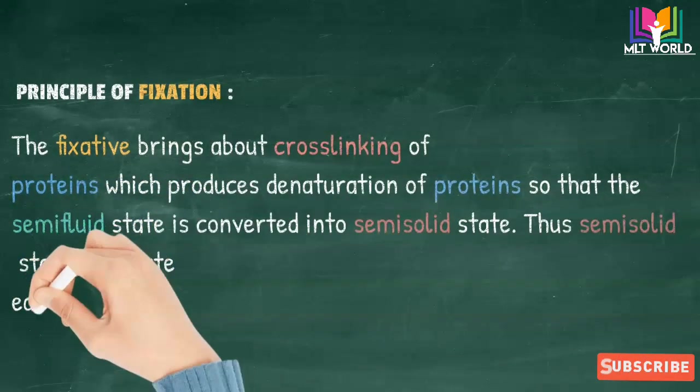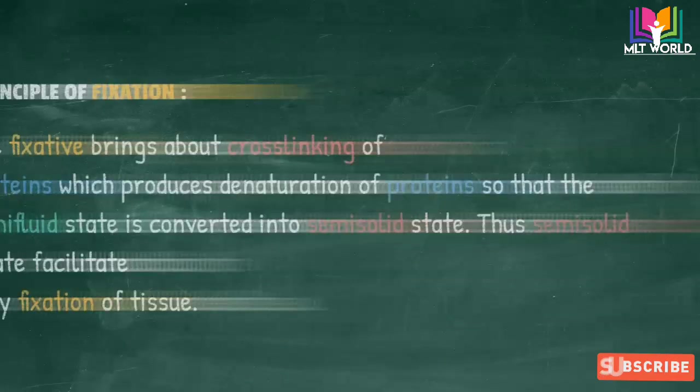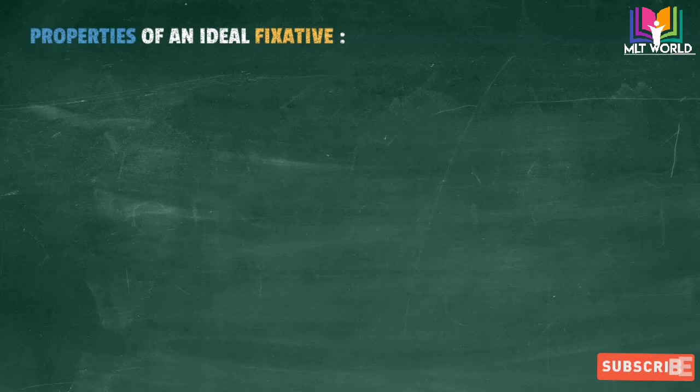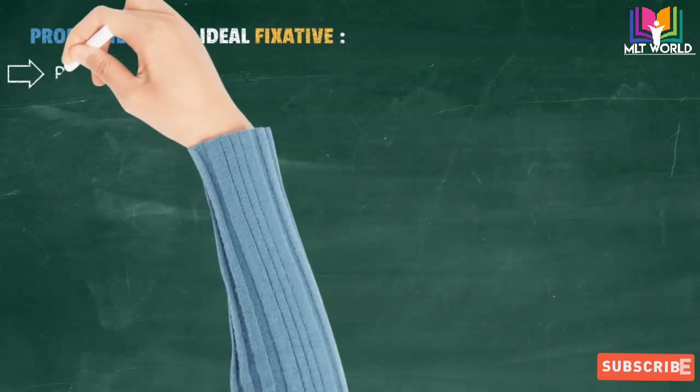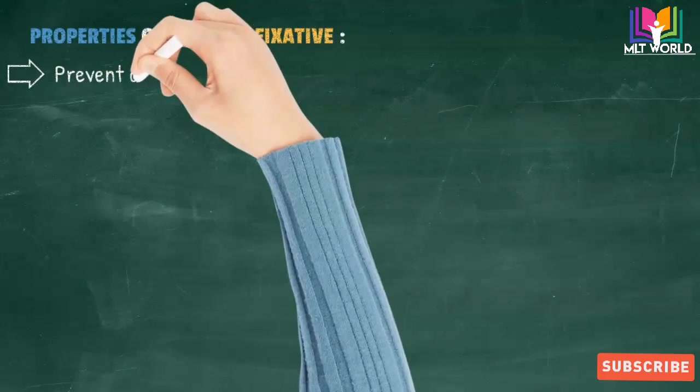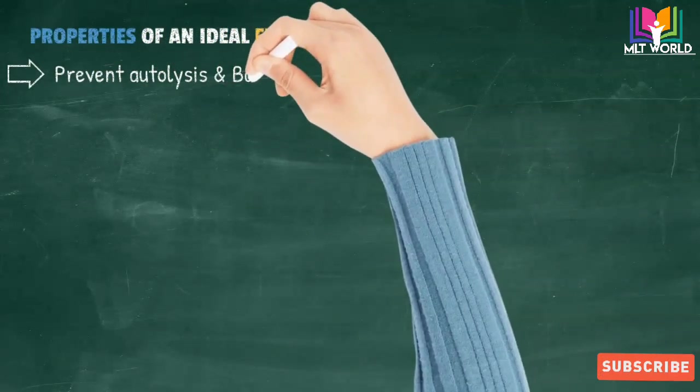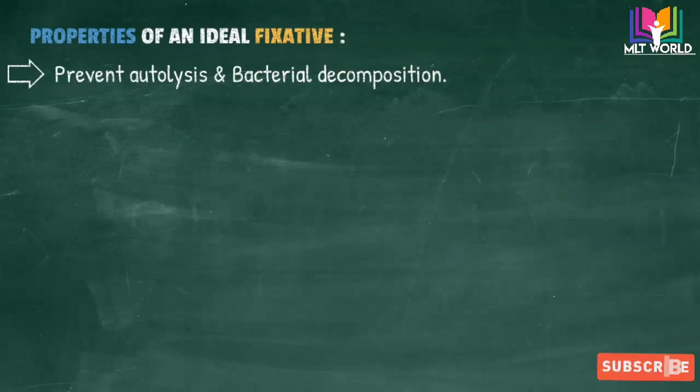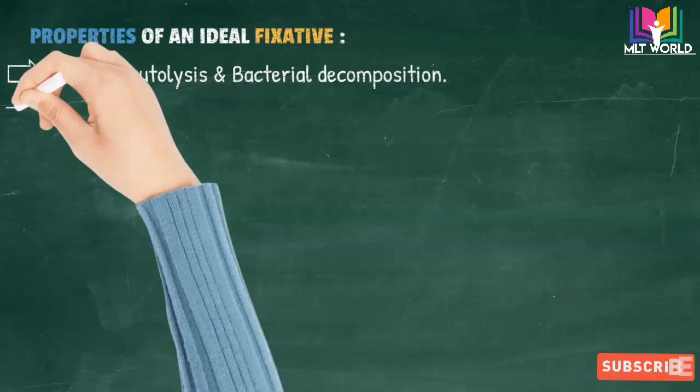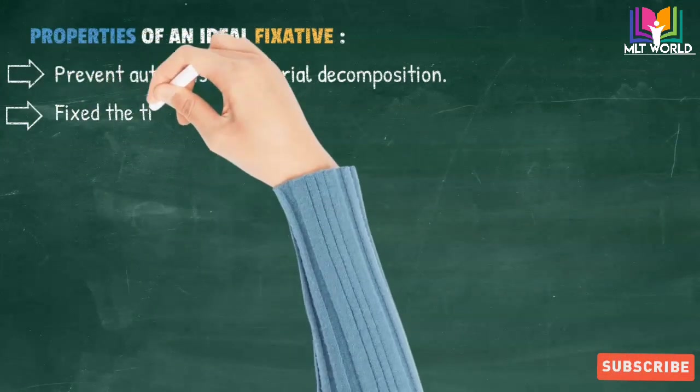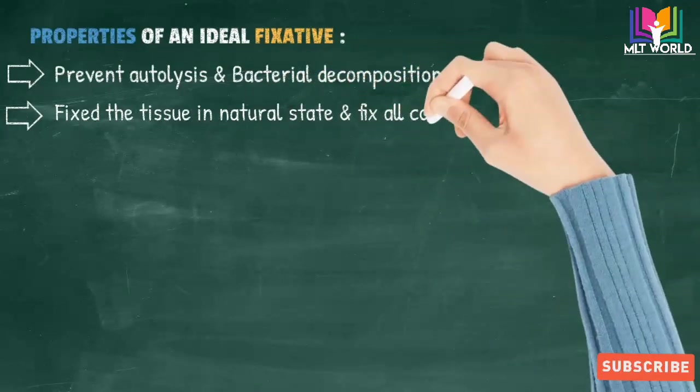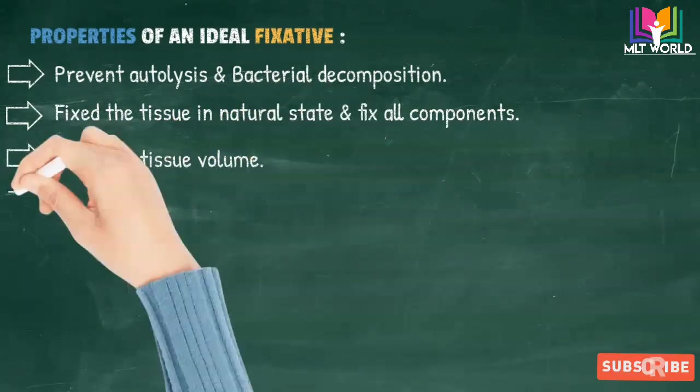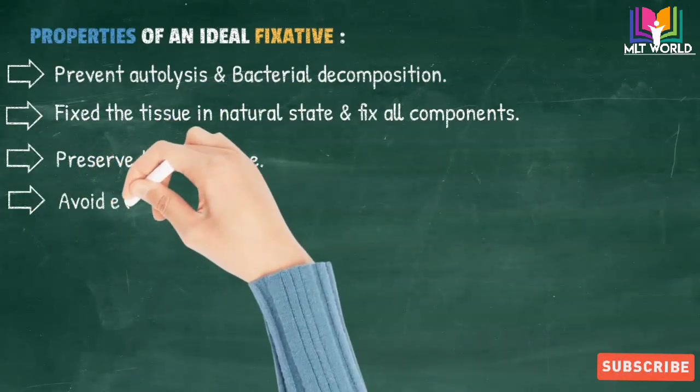Properties of an ideal fixative: First, prevent autolysis and bacterial decomposition. As I discussed before, the purpose of a good fixative is to prevent autolysis and bacterial decomposition. Next, fix the tissue in its natural state and fix all components of the cells. Third, preserve the tissue volume.